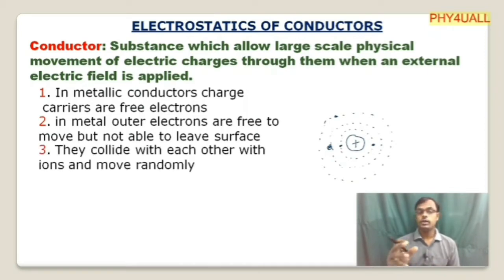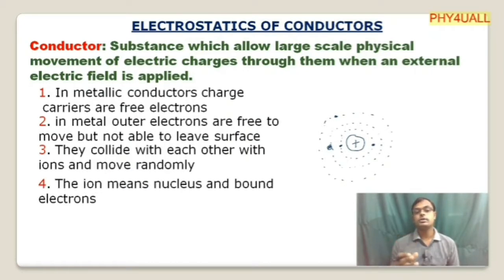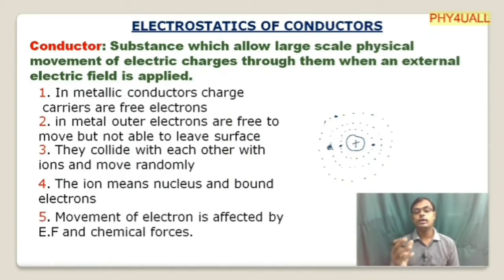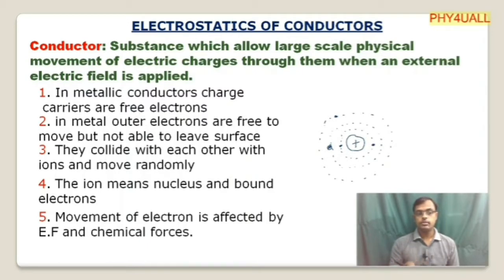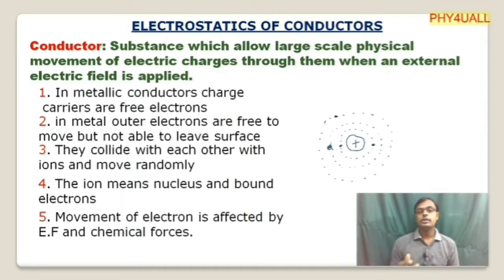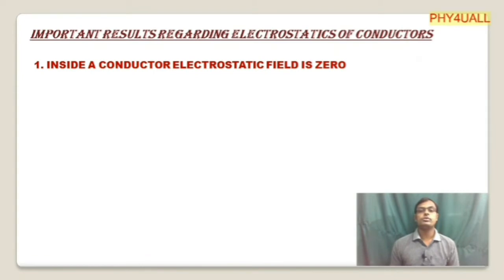While moving, these free electrons collide with each other and with the ions, moving randomly. The ions consist of the nucleus and the bound electrons. The movement of electrons is affected by electric field and chemical forces, but here we are only dealing with the movement of electrons due to an external electric field.